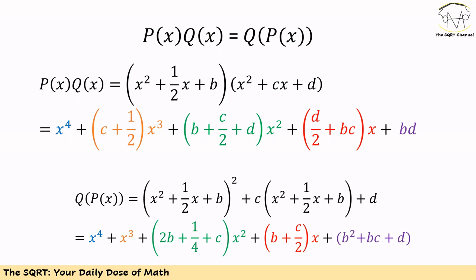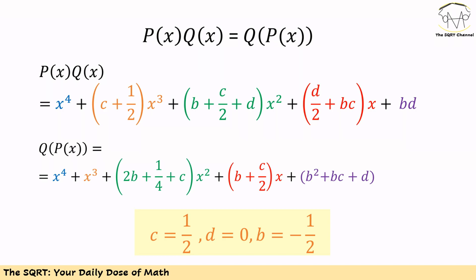On the other hand, when we calculate Q(P(x)), the coefficient for x⁴ is 1, for x³ it is 1, and for x it is B + C/2. Now we use the coefficients from P(x)·Q(x) and set them equal to those from Q(P(x)). For x⁴, 1 = 1, which checks out. For x³, C + 1/2 = 1, so C = 1/2.